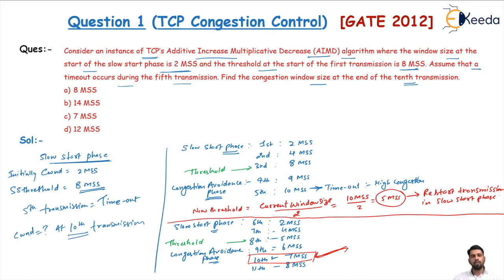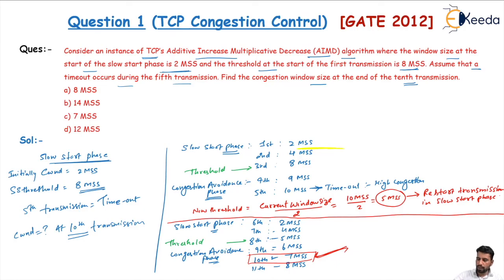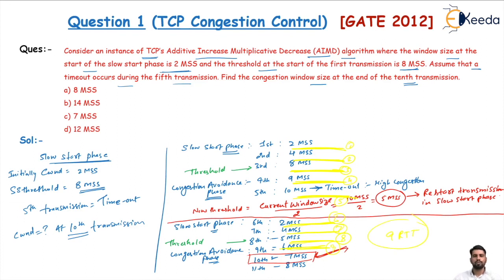If the question asks how many RTTs take place, or how much time up to the 8th or 10th transmission given the time of one RTT, you can count the RTTs directly between the gaps. Each gap represents one RTT. Counting the bars: 1st, 2nd, 3rd, 4th, 5th, 6th, 7th, 8th, and 9th — meaning 9 RTTs take place up to the 10th transmission, and the size of the 10th transmission is 7 MSS.